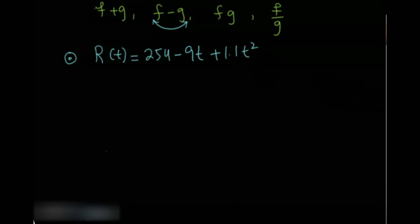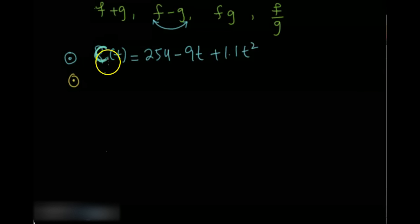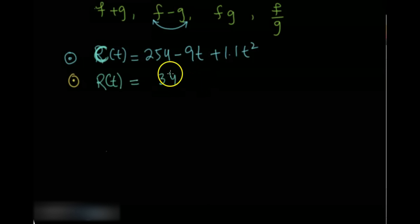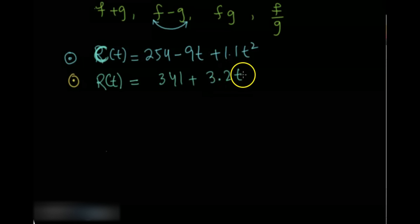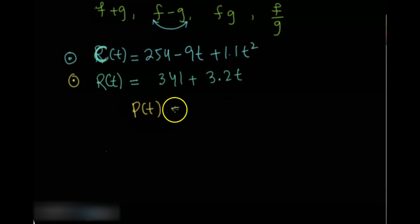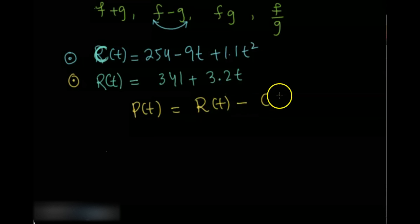Similarly, the cost at time t is given by c of t. The revenue r of t is equal to 341 plus 3.2t. Now you are asked: what is the profit at time t? You know that profit equals revenue minus cost, so these are two functions and you are taking their difference.